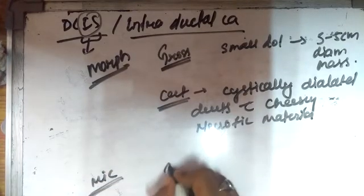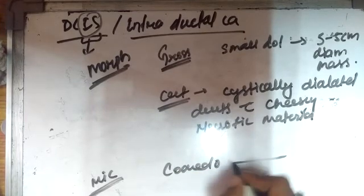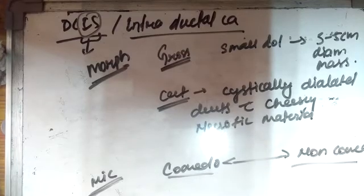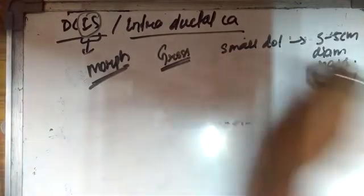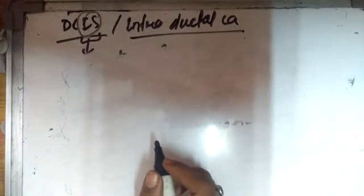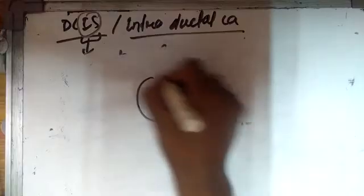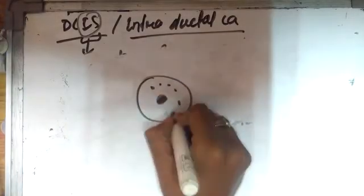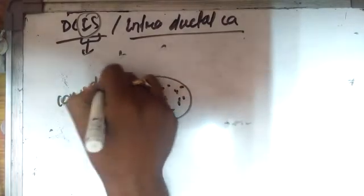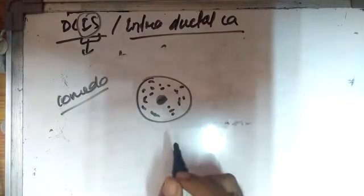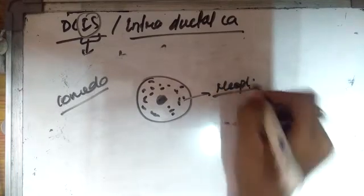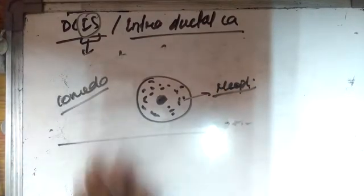In microscopic there are two types of patterns which is very important: comedo and non-comedo. In comedo pattern there is centrally placed necrotic material and debris surrounded by the neoplastic cell or the tumor cell.